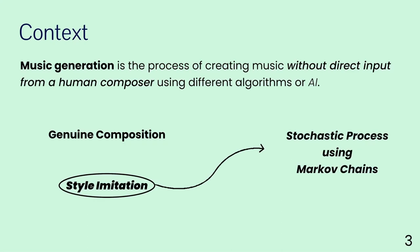So what is actually music generation? Music generation is the process of creating music without direct input from a human composer, using different algorithms or artificial intelligence. This generation can be a genuine composition — making original work through a variety of processes and algorithms — or we could be tackling style imitation, which uses data from an already existing composer such as Bach or Mozart to imitate their style and characteristics.